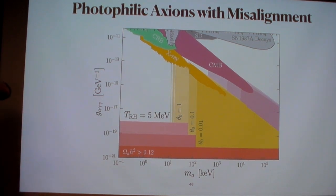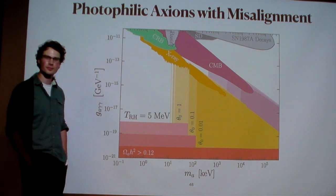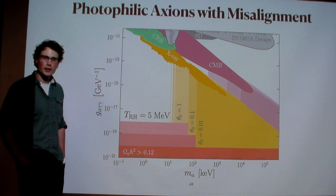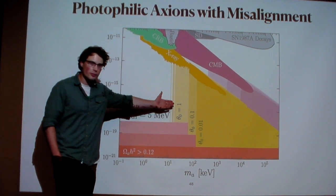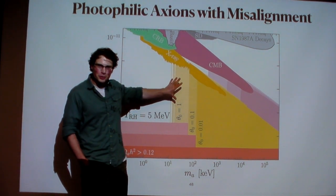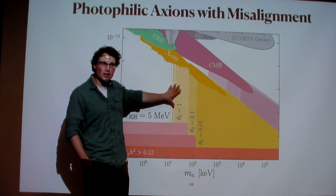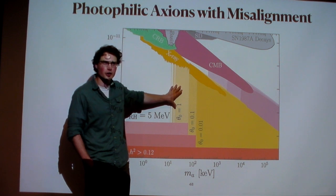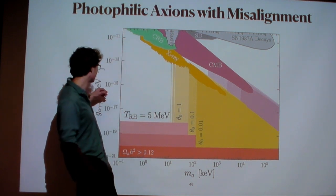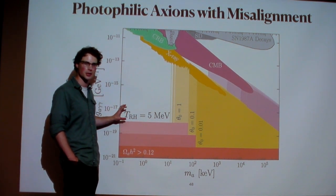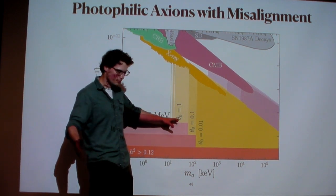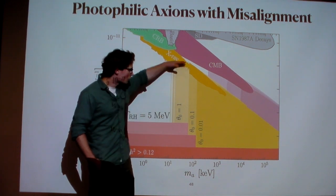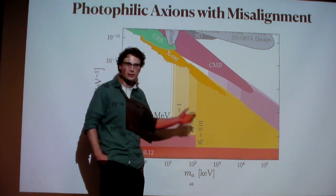If theta-naught can be made small, then you can have a much higher FA. Assuming an order one misalignment angle, we get strange-looking constraints because the axion abundance from misalignment does not depend on MA if it's produced during an early matter domination era, which is what we're assuming. This is the first place where I'm assuming something about cosmology beforehand — early matter domination before reheating. These constraints can essentially rule out an entire mass range. However, this loses the irreducibility property because I can tune theta to zero and reduce it.